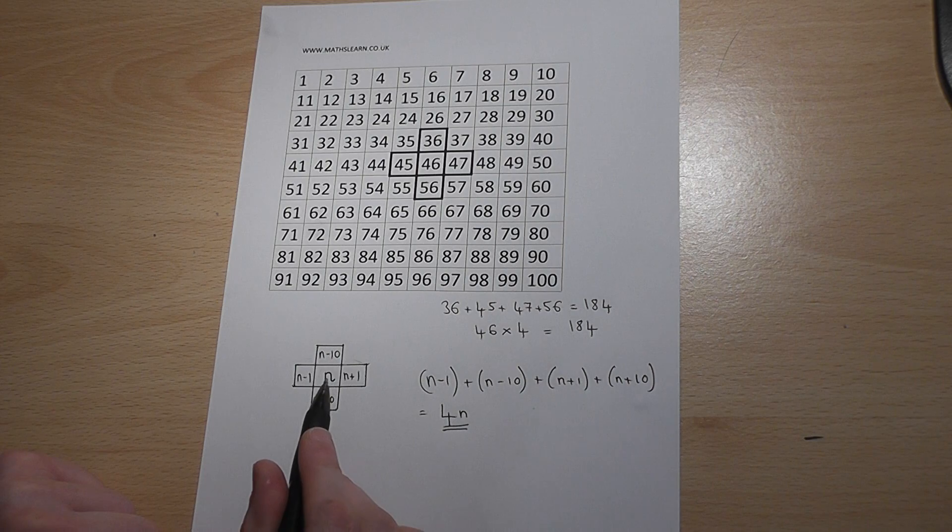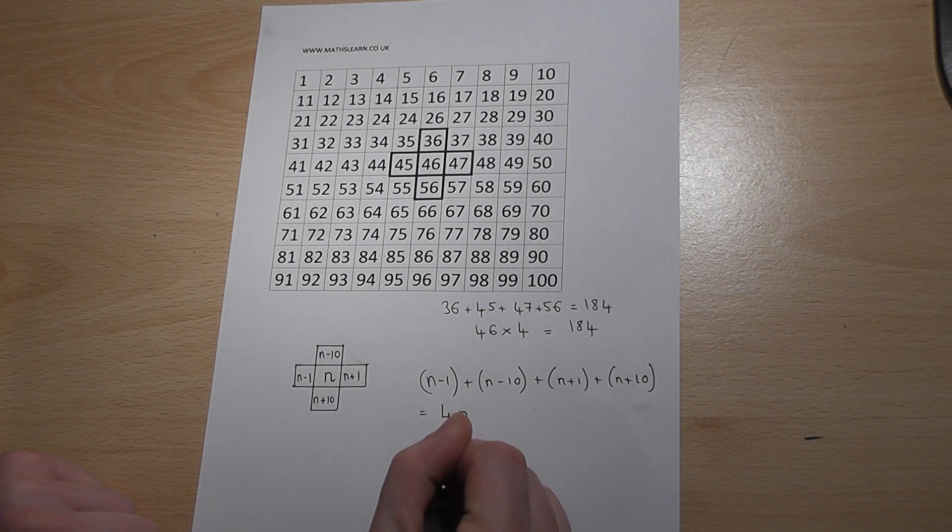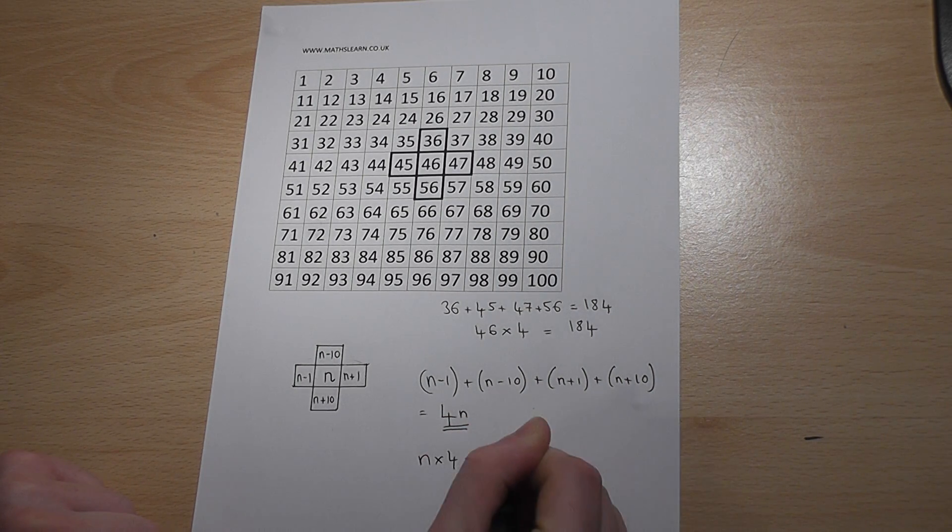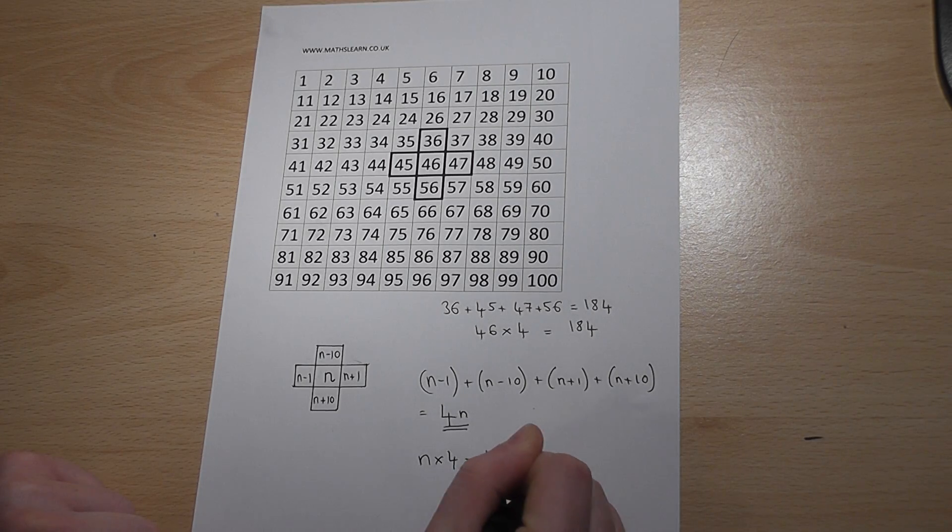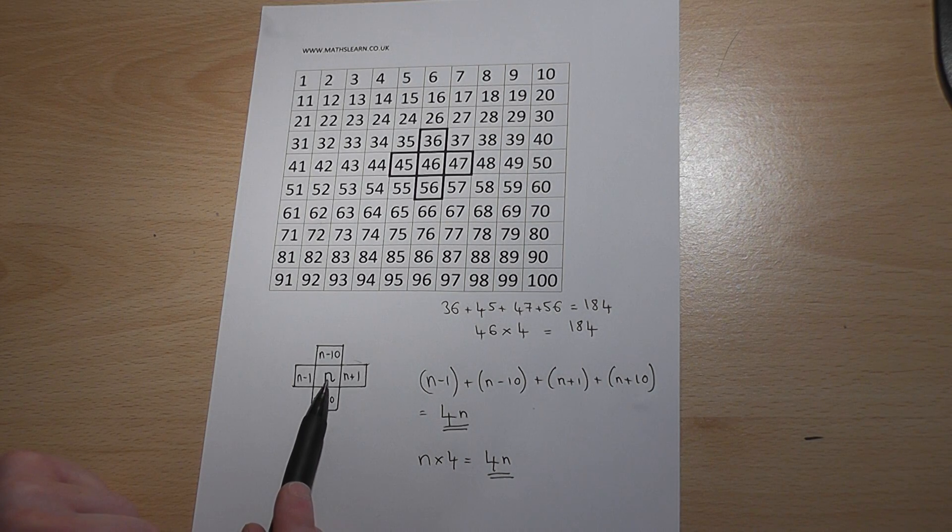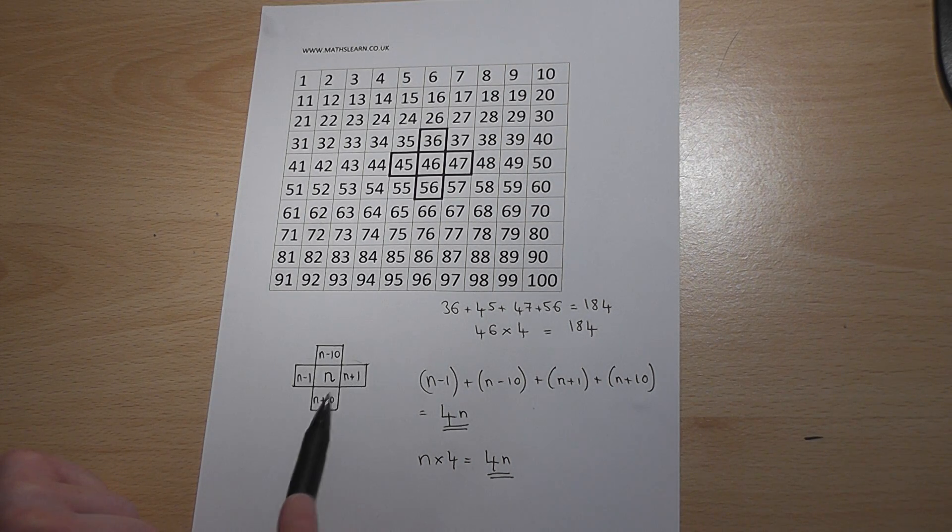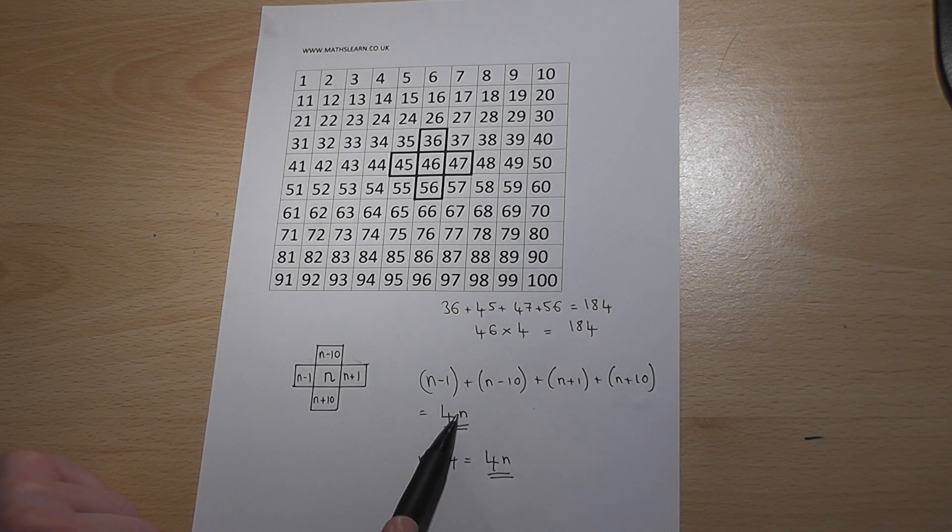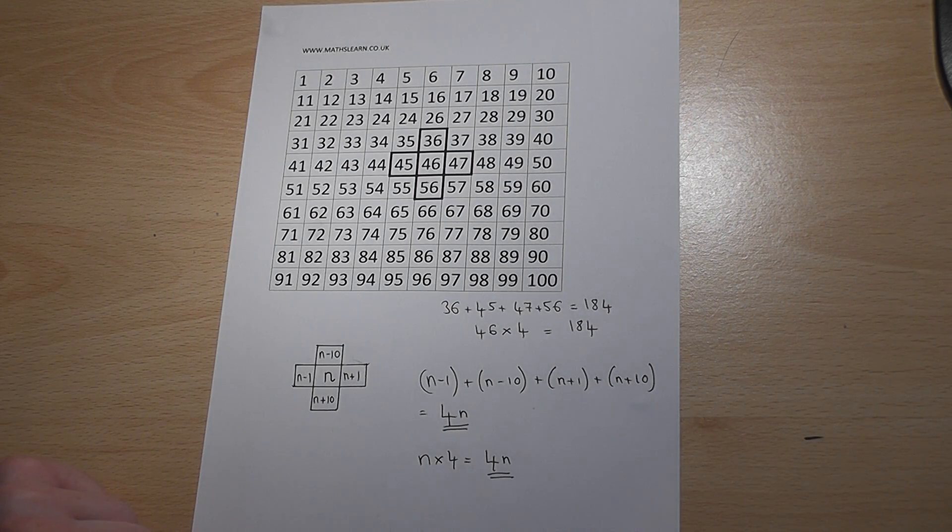And the centre number is n, and if we do n times 4, we also get 4n. So we've proven the result. It doesn't matter what the centre number is, the outer numbers will always add up to 4 lots of the centre number.